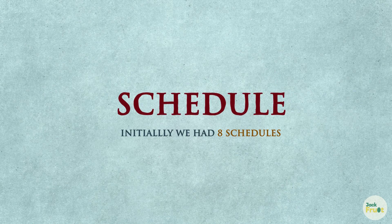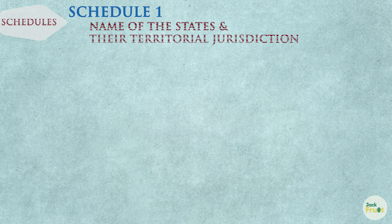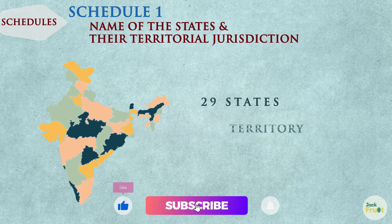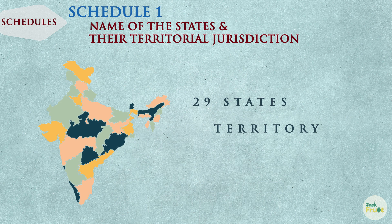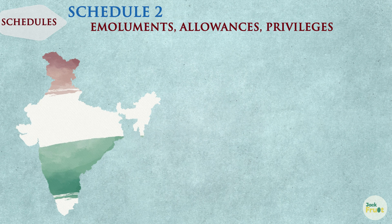The schedules are kept separate and not included in the original text of the Constitution because they contain lengthy informative details which are more than 100 pages of a document. Initially we had 8 schedules. After amendments, now the Indian Constitution contains 12 schedules. Let's look at some of the important schedules. The first schedule deals with the names of the 29 states and their territorial jurisdiction. It also contains the details regarding the respective laws and acts that determine the boundaries of each state. The second schedule covers the provisions for emblems, allowances and privileges of the following.